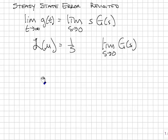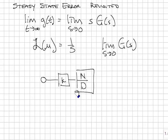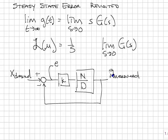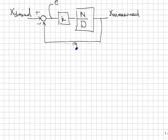In transfer function form, we have a system with unity feedback: a controller, a plant expressed as a transfer function — the ratio of two polynomials in s — and unity feedback. I'm interested in the error value, which is the difference between what I measured and what I want the input to be. Ideally, the measured value equals the desired value after all the transients have died out. I rewrite the transfer function so that the output is e, the error.